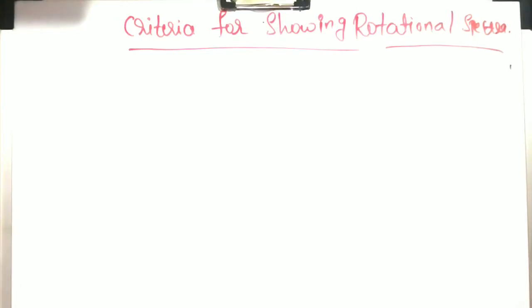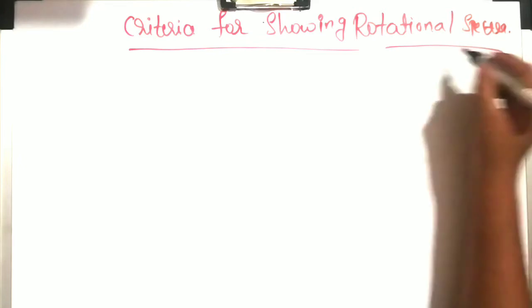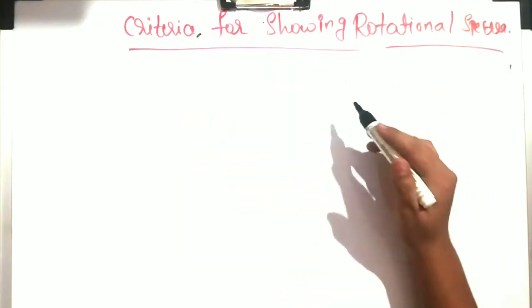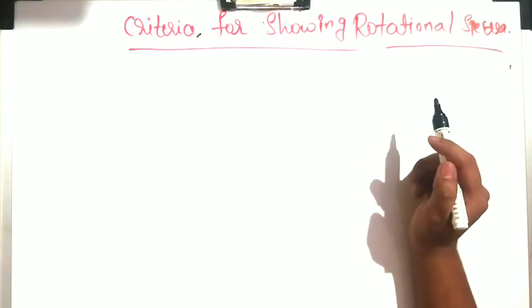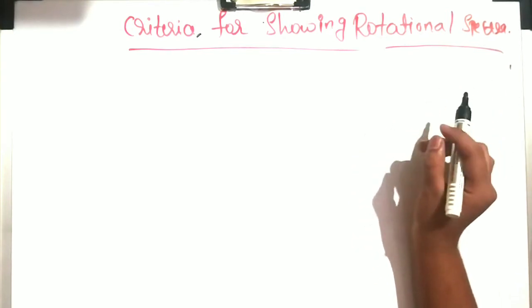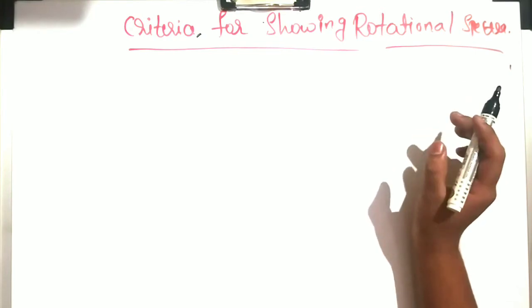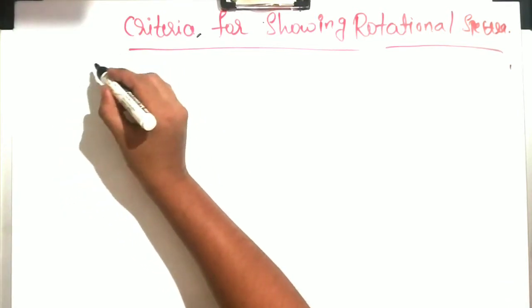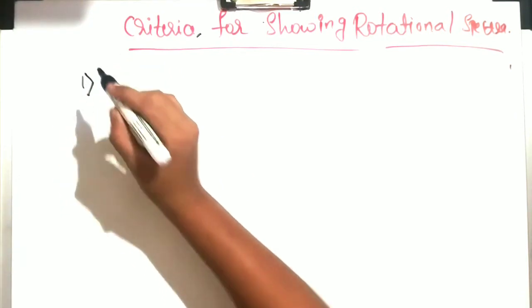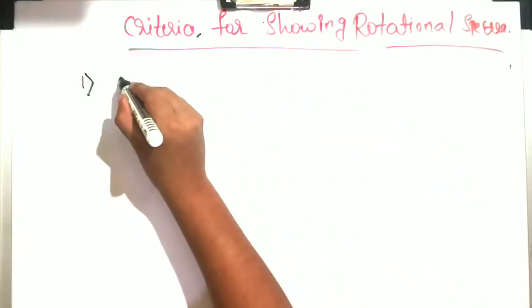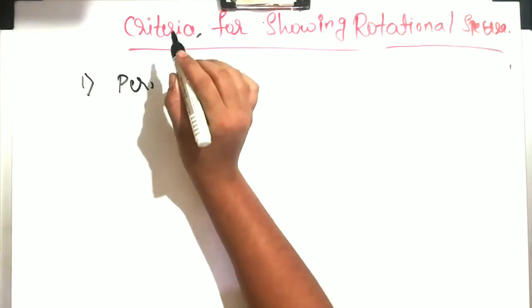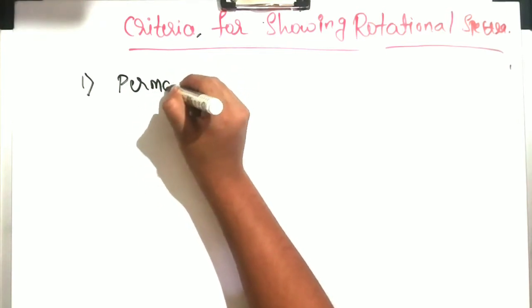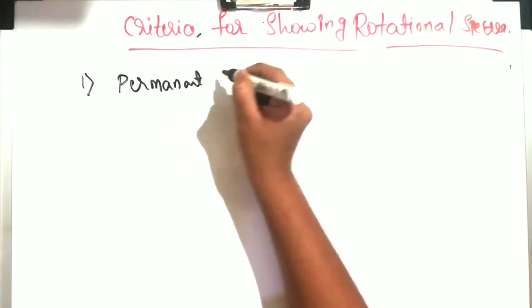Hello, in this video we will discuss the criteria for showing rotational spectra. We have already discussed what criteria a molecule should have for microwave or rotational spectroscopy, but under this heading we will discuss it again briefly. The first criteria is that the molecule should have a permanent dipole moment.